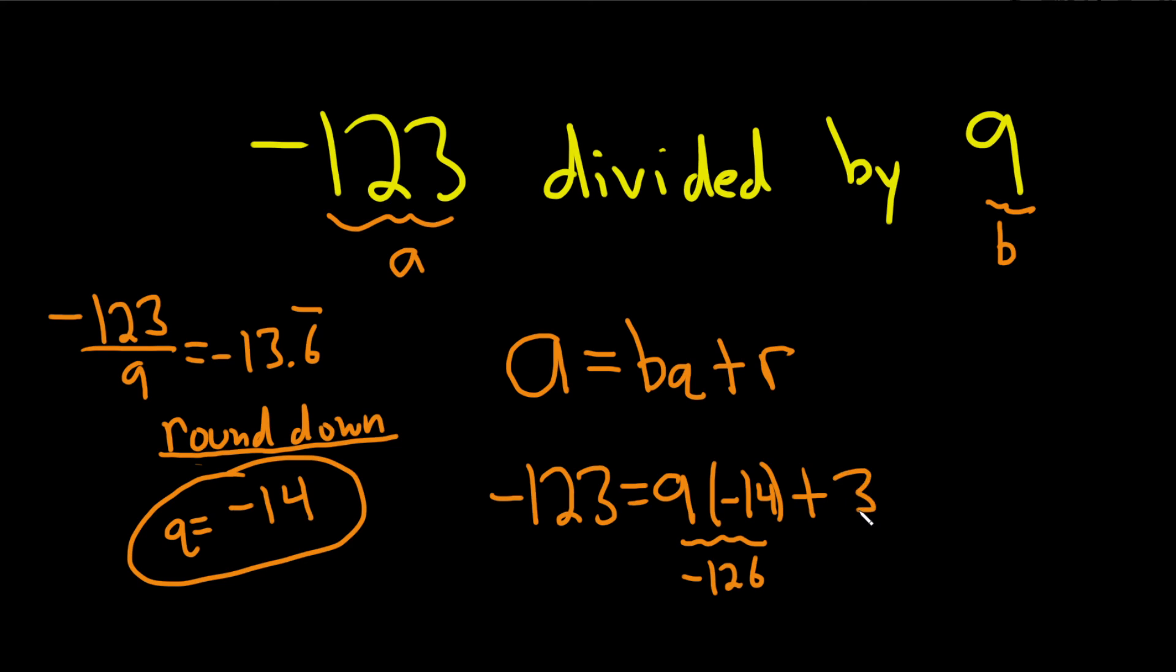A positive 3. Three plus negative 126 is negative 123. That's the remainder in this problem: R equals 3.